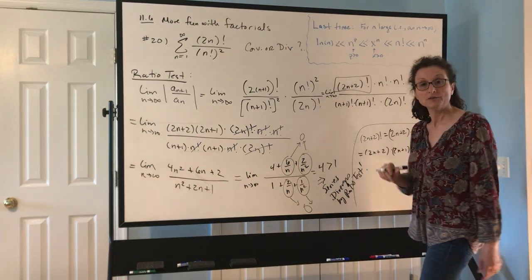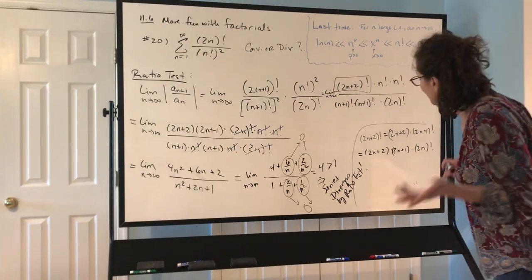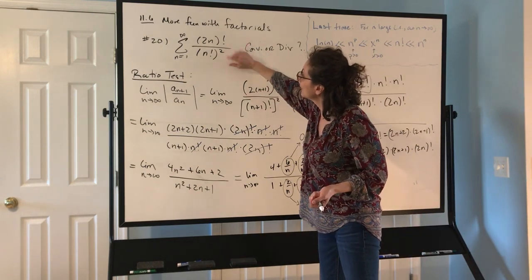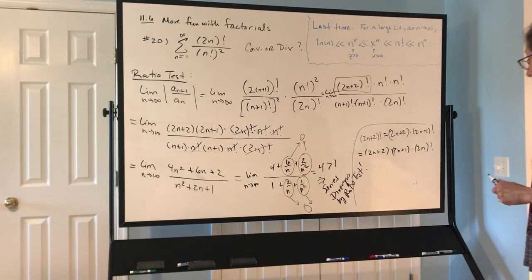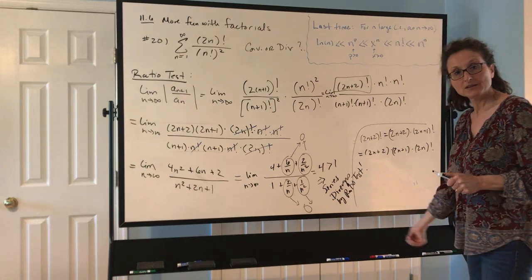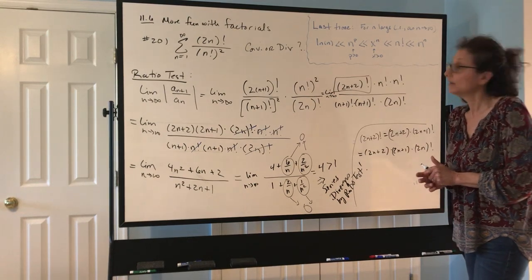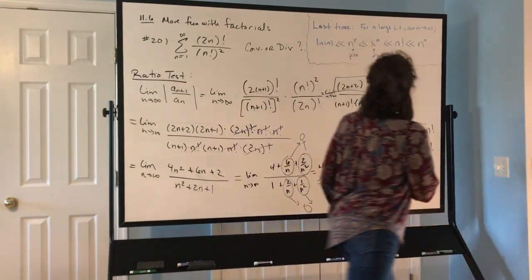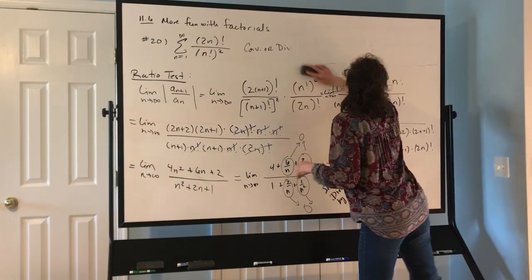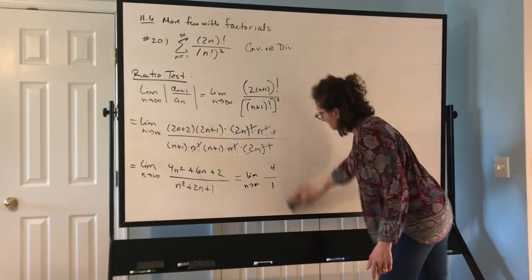We've now seen an example of absolute convergence and an example of divergence by the ratio test. Now we want to really understand why the ratio test actually works, so let's prove it. We've been using it non-stop and it's pretty powerful — now let's see why.